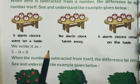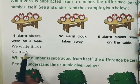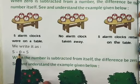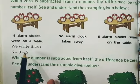Now how will we write this? We write it as 5 minus 0 equals 5. From 5 alarm clocks, we subtract nothing, meaning zero is subtracted from 5, so we have 5 alarm clocks remaining.